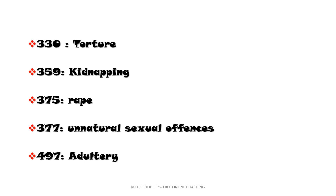Next come natural and unnatural sexual offences. IPC 375 talks about rape, 377 is for unnatural sexual offences, and 497 is for adultery. That's all for today. Thank you.